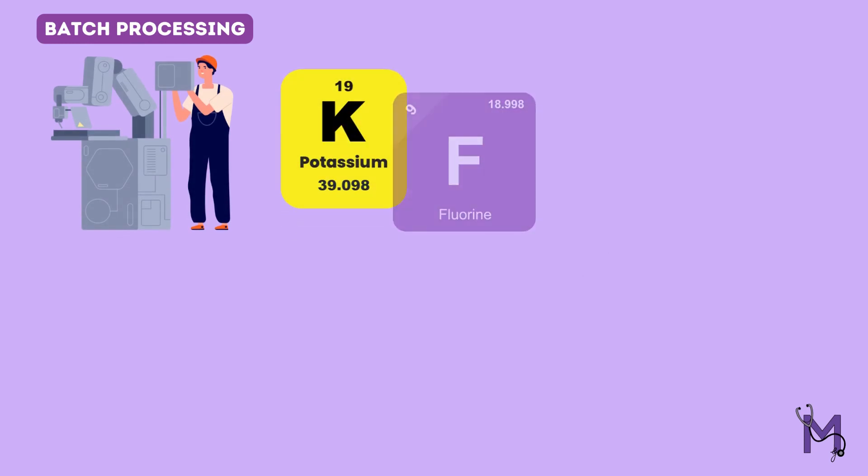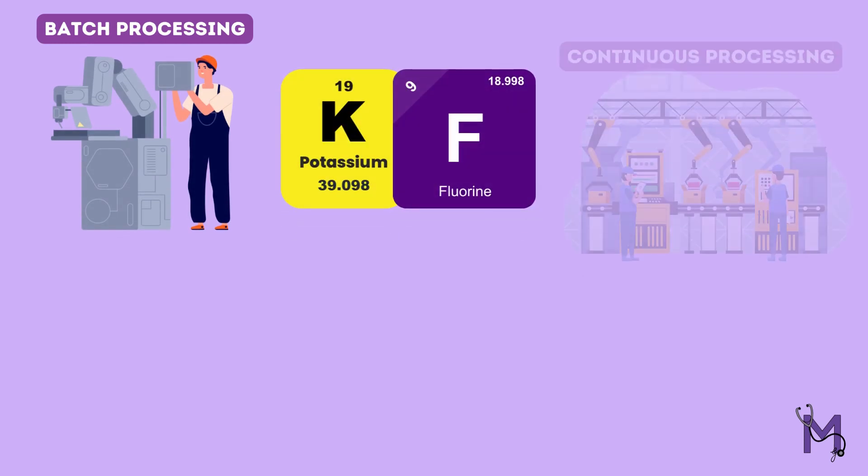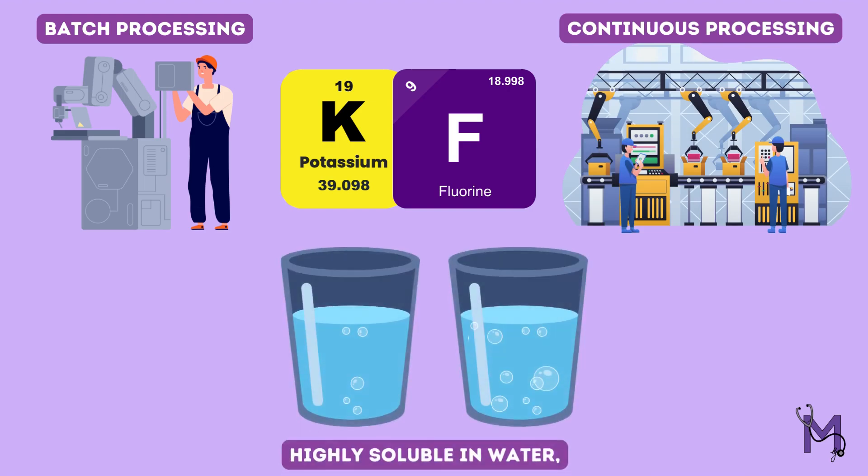Unlike batch processing, potassium fluoride is the preferred compound in continuous production facilities since it's highly soluble in water in comparison to sodium fluoride.